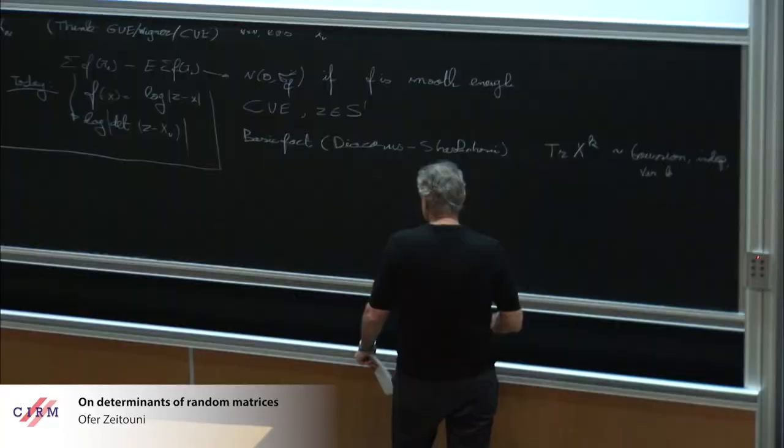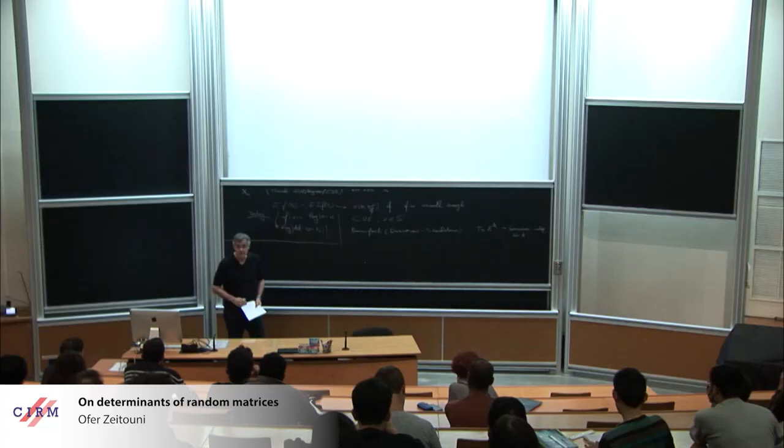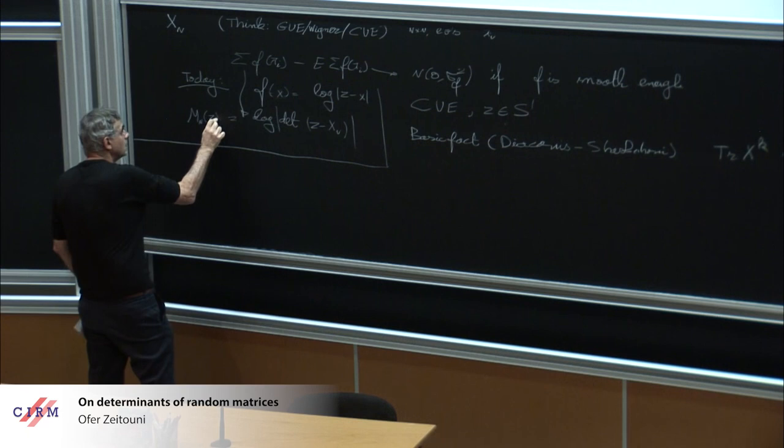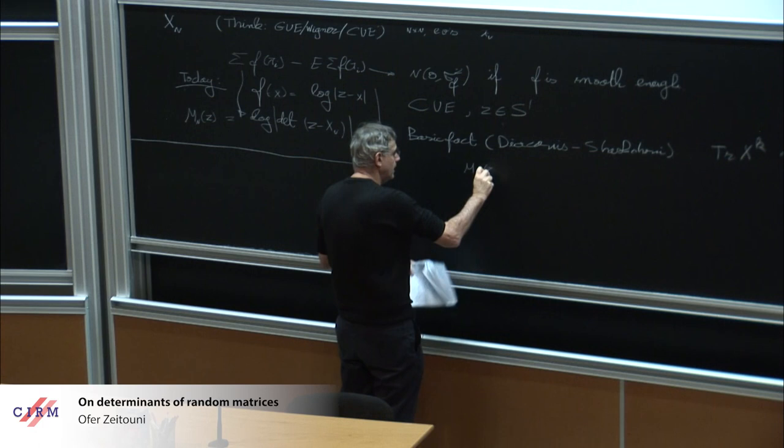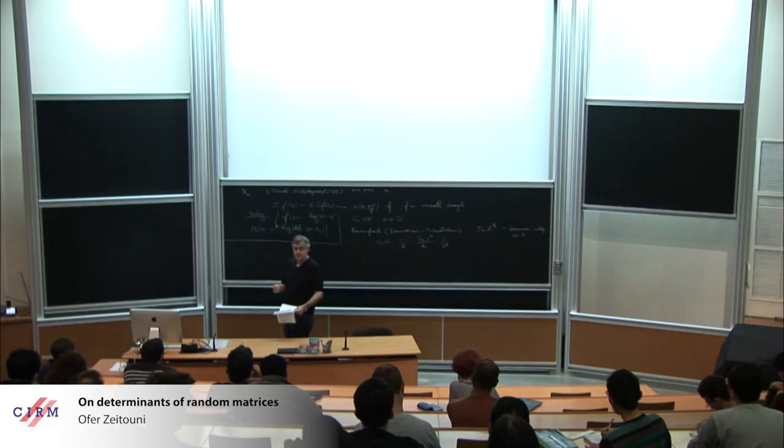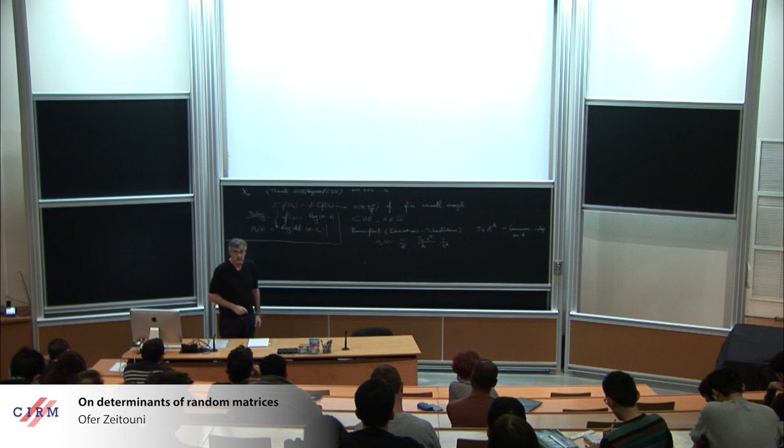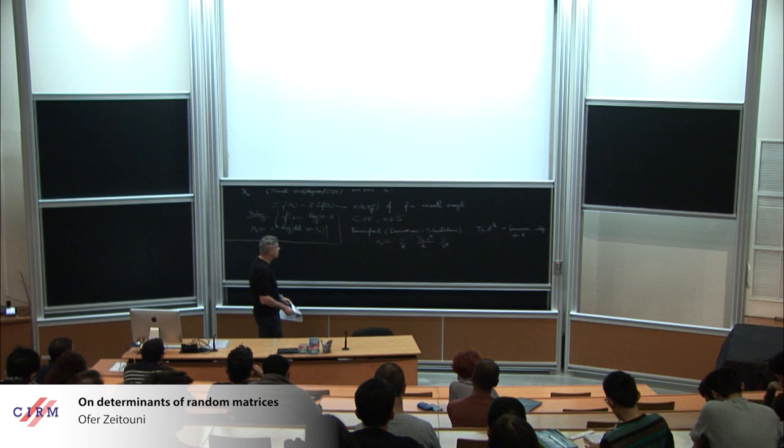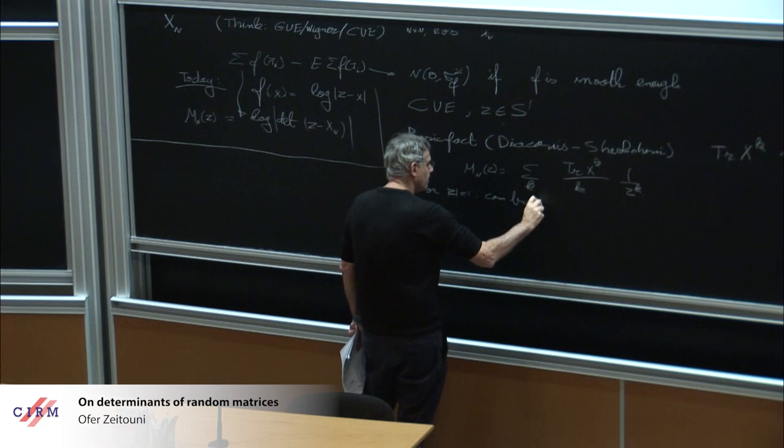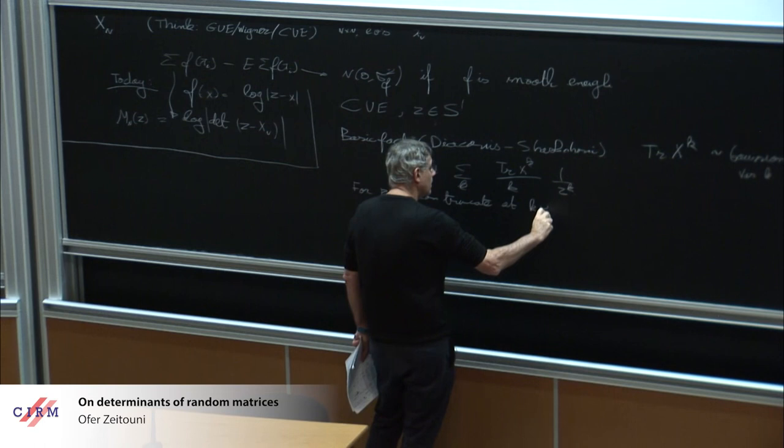The original proof is representation theoretic and actually gives more than this. If you take moments of this beast, and even mixed moments for different k's, if the total moment you take is less than n, the expectation is exactly the same as for the Gaussian case. It's an algebraic equality, so it proves the CLT for traces and much more.